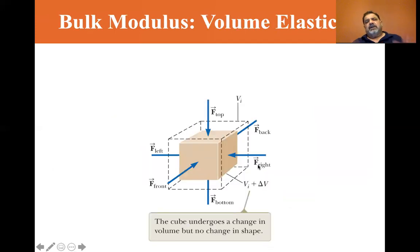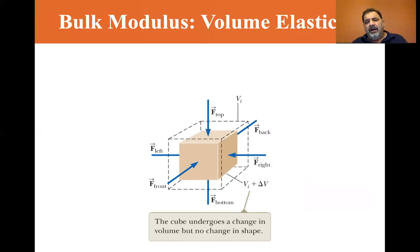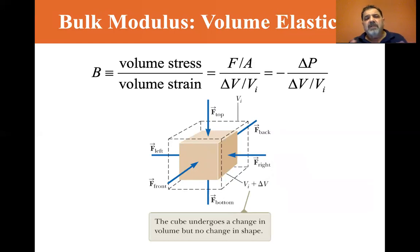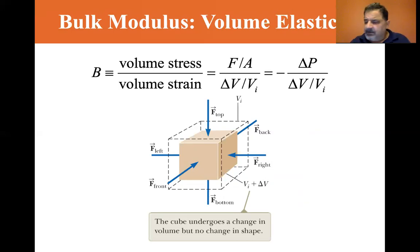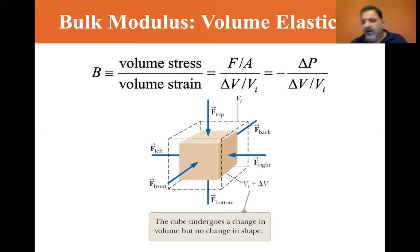For the bulk modulus, an eraser will likely float, but if you could get it down into a long tube of water under high pressure, it would compress. The cube undergoes a change in volume but no change in shape — it's still a cube, but smaller. So the bulk modulus uses volume stress — force over area — and the volume strain is delta V over V_initial. It's written as minus delta P over (delta V / V_initial) because it gets smaller.